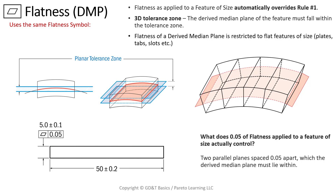This doesn't just apply to sheet metal — there are all different kinds of materials and parts. If an engineer knows a part will be machined to a certain thickness but after it's released it's going to bow, and there are no requirements to flatten it back out, they could use flatness DMP. It's not relative to any datums — it is a form control — but it would allow the plate or part to bow. It still has to pass the size requirements, so the 5mm plus or minus 0.1 still has to pass at any given two-point check, but it won't be held to the rule number one envelope requirement.